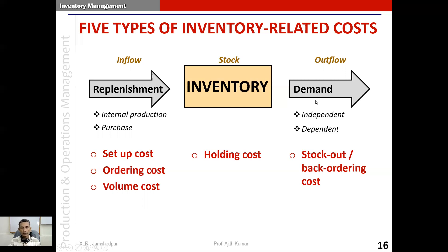We've already seen what holding cost means. On the outflow or demand side, there are also costs — stock out cost and back-ordering cost. Demand can be independent demand or dependent demand. For example, from the point of view of a retailer selling a mobile phone, the demand for that mobile phone is called independent demand — customers come to the store, buy the phone, and leave.